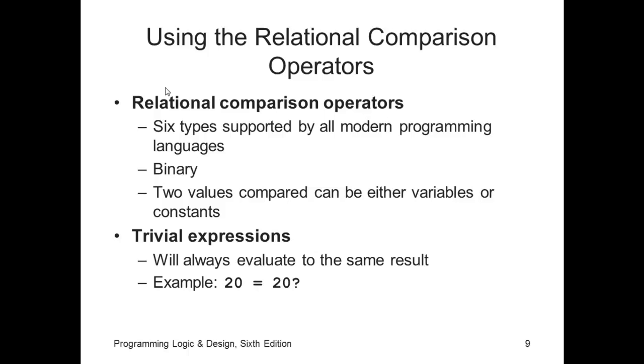You compare the two values by using either variables or constants or a combination of a variable and a constant. The term trivial expression is when you compare two constants. In this example, the digits 20, 20 equals 20, that's always going to be true. It's never going to change.